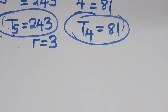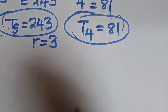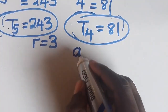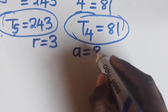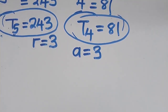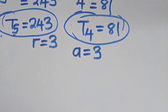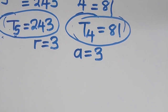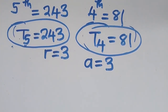With this data, we've also found the first term, which is 3. The second question is to find the seventh term. How can you find the seventh term?